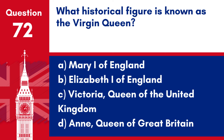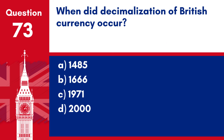Answer: b. Elizabeth I of England. Elizabeth I, who reigned from 1558 to 1603, was known as the Virgin Queen because she never married.